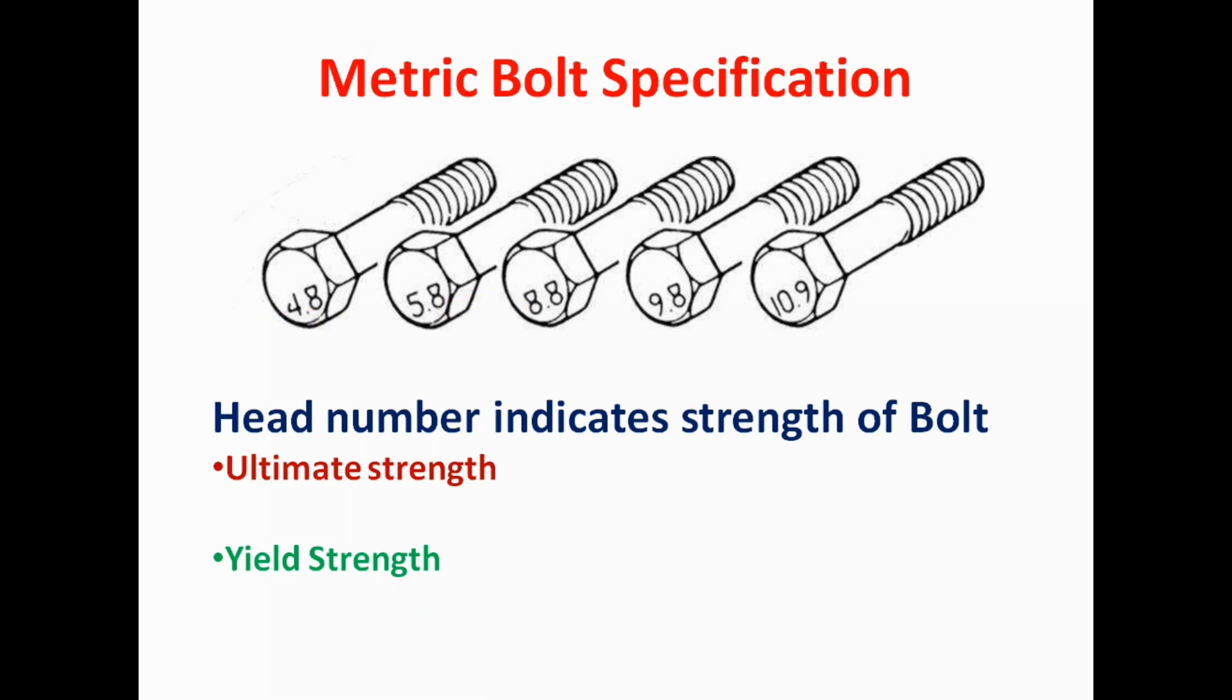In this two digit number, the first digit represents the ultimate strength of the bolt, and the second digit indicates yield strength of the bolt.